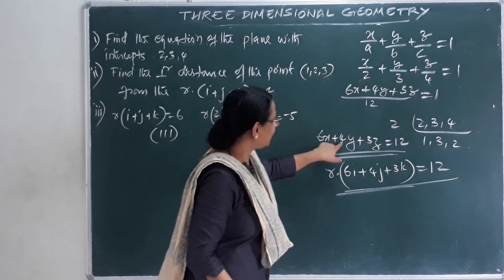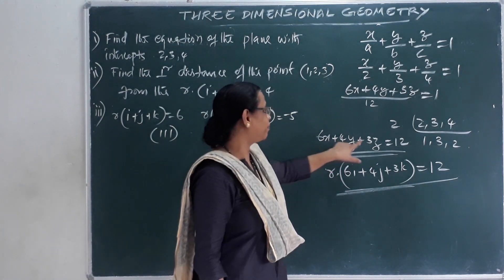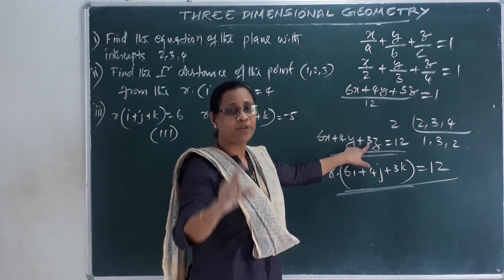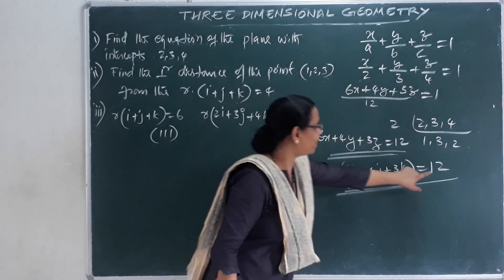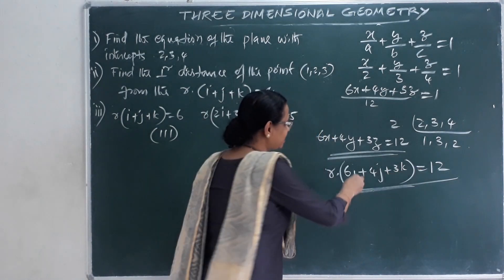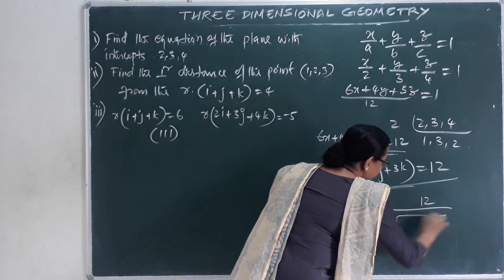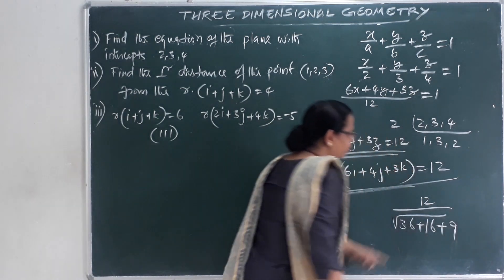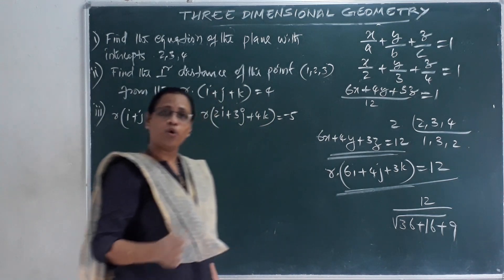The coefficients 6, 4, 3 represent the direction ratio, which is the normal direction to the plane. This gives us n-cap. The distance formula involves the denominator, which is the original distance: root of 36 plus 16 plus 9.